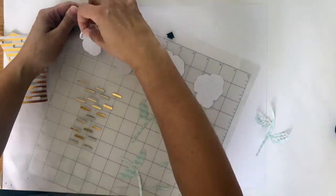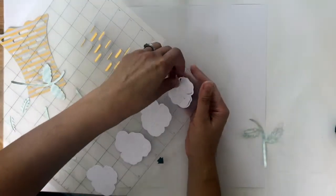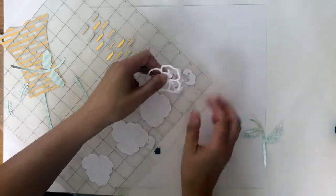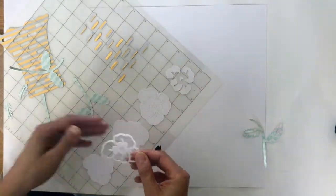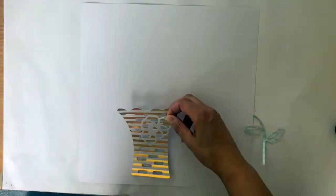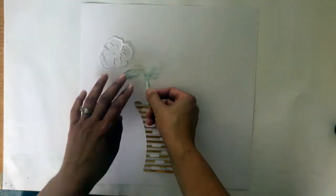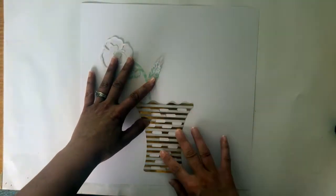What I did was mirrored some of them so that they weren't all the same. So I'm just taking each three elements off my mat so you can see them, and my plan is to have the vase with flowers coming out of it.